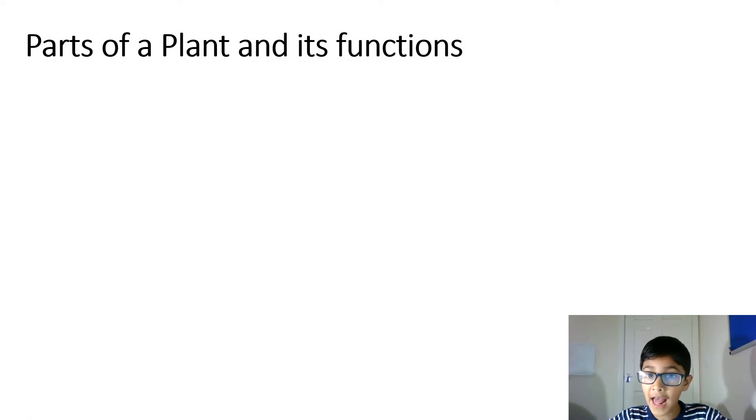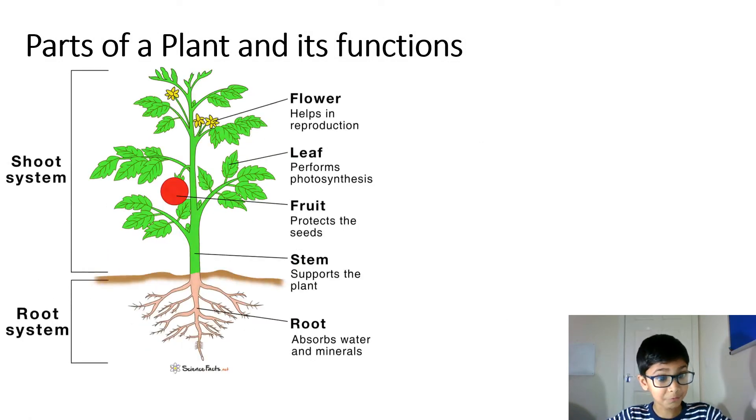Parts of a plant and its functions. Flower helps in reproduction. Leaf performs photosynthesis. Fruit protects the seeds. Stem supports the plant. Root absorbs water and minerals.